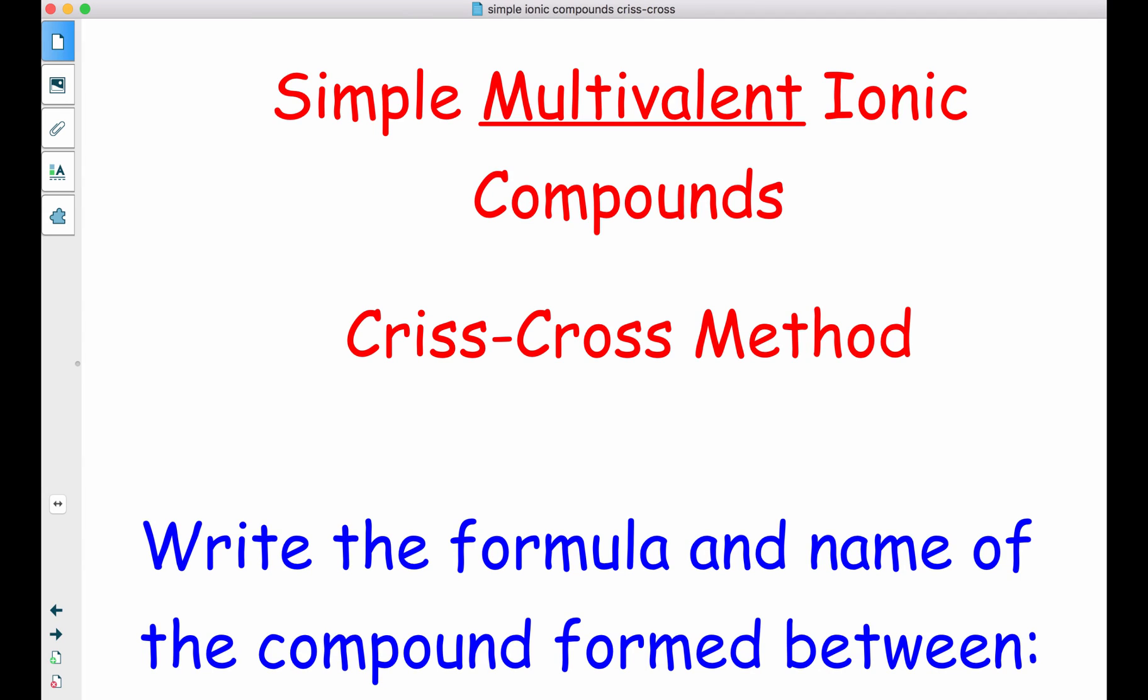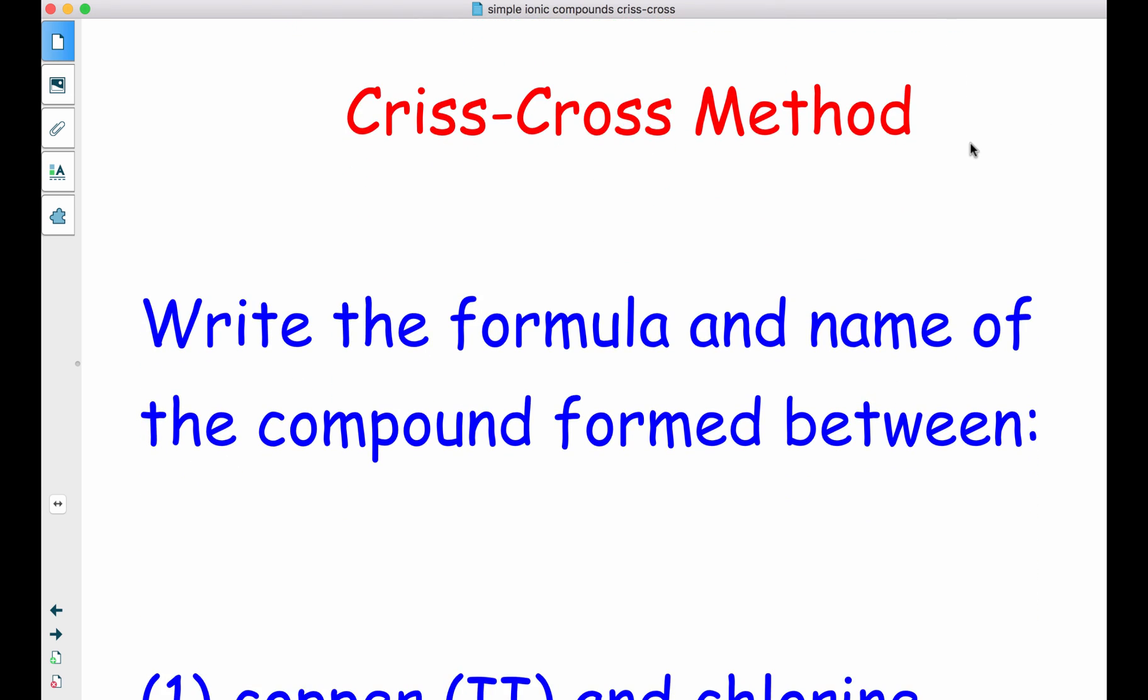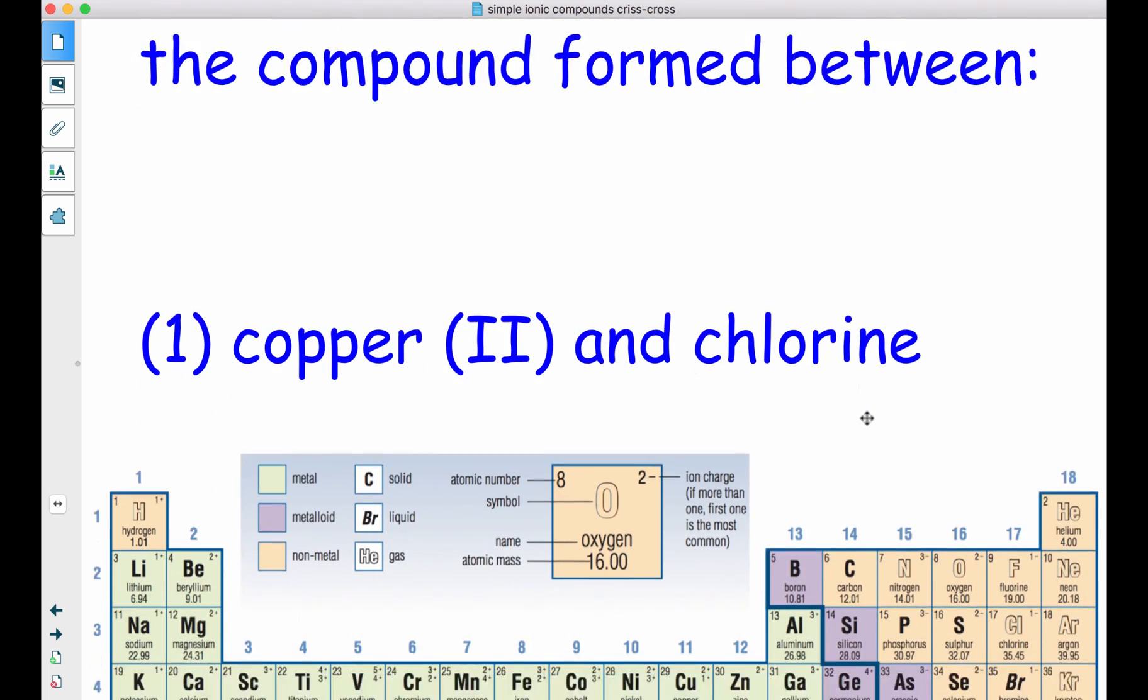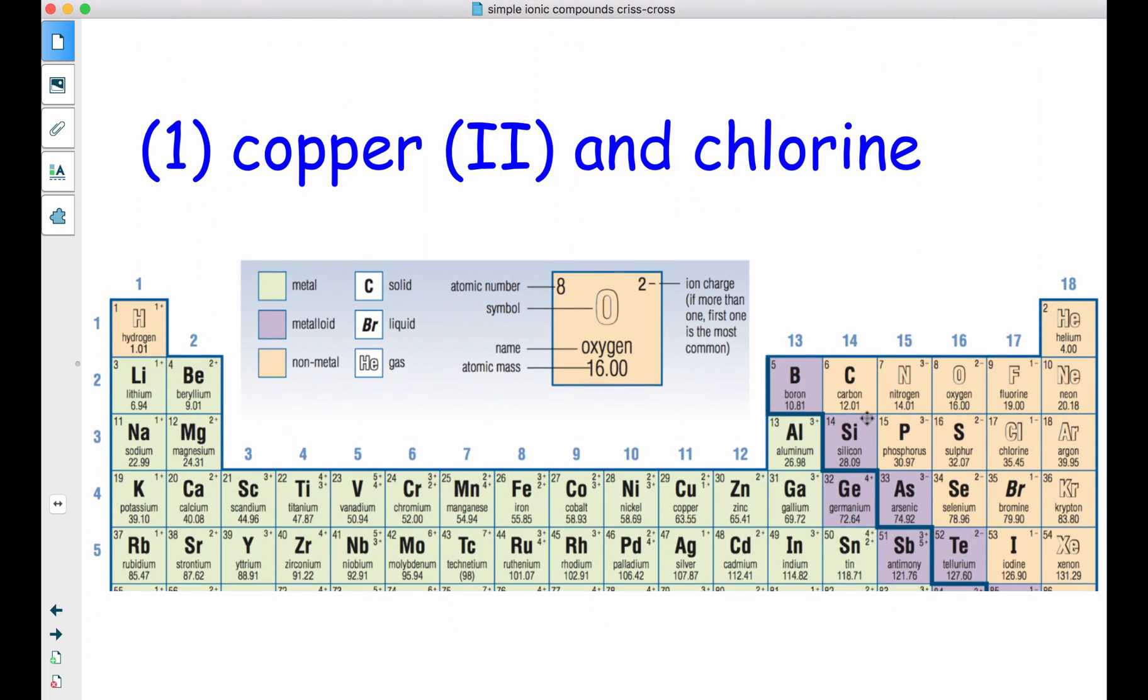Okay, let's take a look at doing ionic compounds with what's known as a multivalent metal. We're going to write the formulas and name the compounds that are formed. In this case, we're going to look at copper (II) and chlorine.